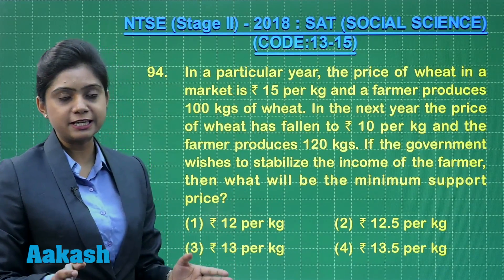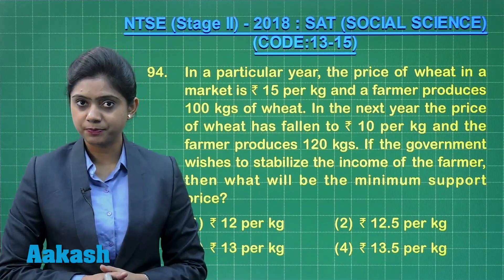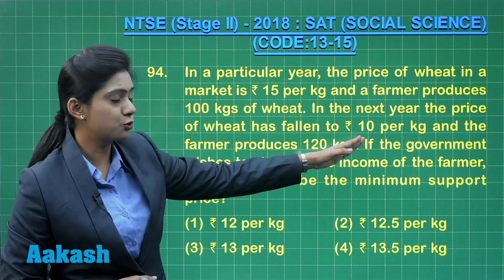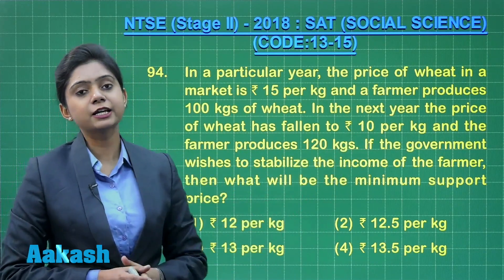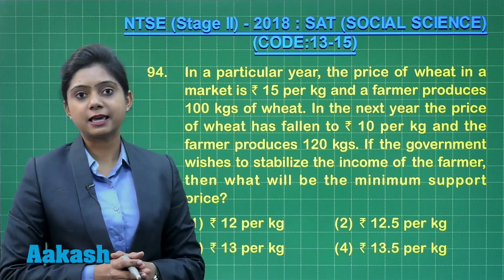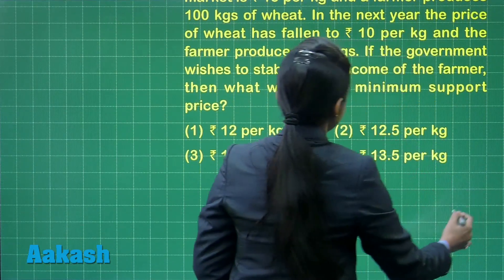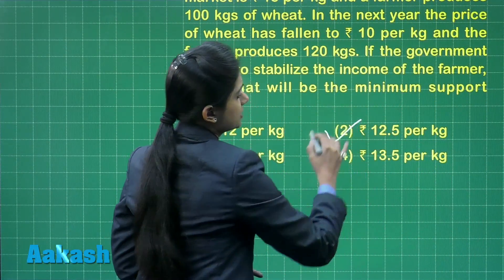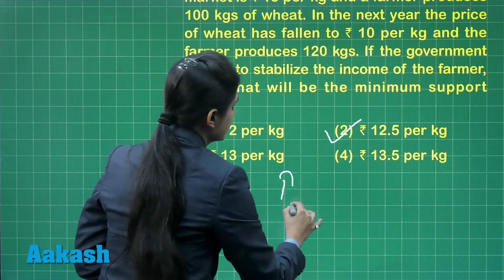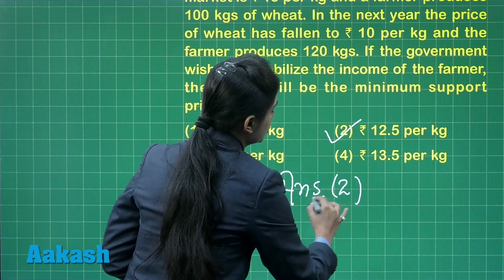Earlier the farmer was earning rupees 1500, but now because of the reduction in the price of wheat to rupees 10 per kg, he is earning rupees 1200. In order to stabilize his income, the government needs to fix the minimum support price at rupees 12.5 per kg. Hence the correct answer to this question is option number 2.